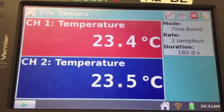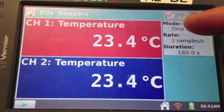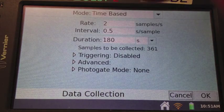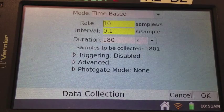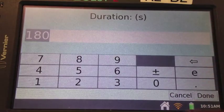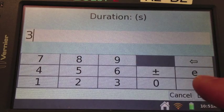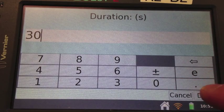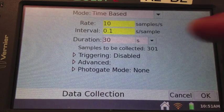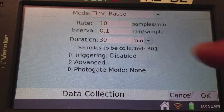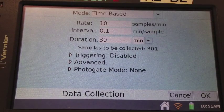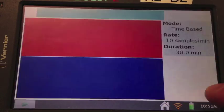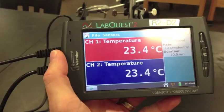Now let's set up our LabQuest for data collection. I'm going to make sure that the rate is 10, and I'm going to change the duration to 30 minutes. So I've got it set so that it's going to run for 30 minutes, and I'm going to take 10 samples per minute. Okay. It's set up.